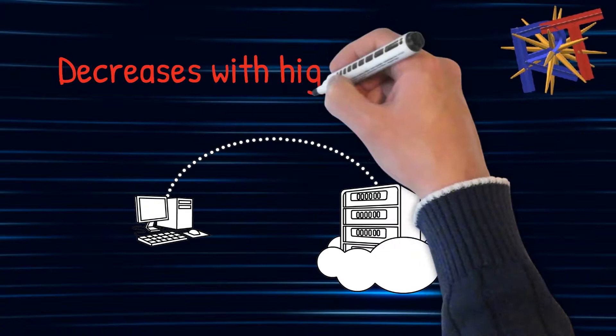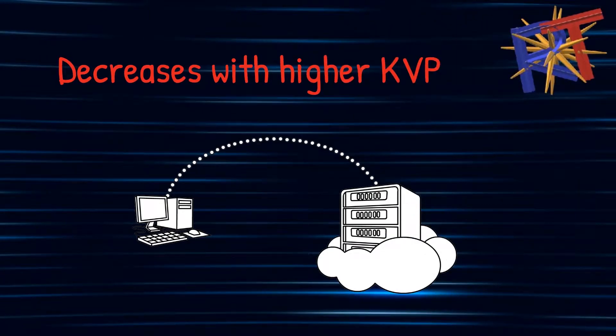We're not doing too much or going too low because as you increase your kvp within the appropriate range, it'll actually decrease the amount of Compton effect, which is what we want.